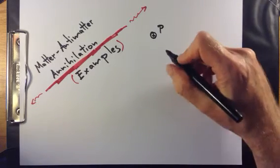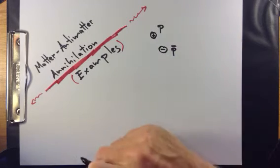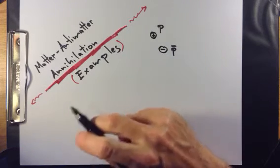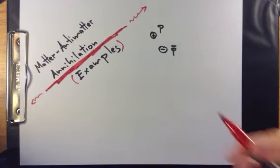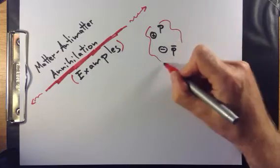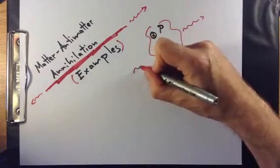It has an opposite particle in the antiproton, which is negatively charged and indicated by P bar. When these two particles meet, the particle and the antiparticle, they destroy each other. They annihilate, and two photons are released.